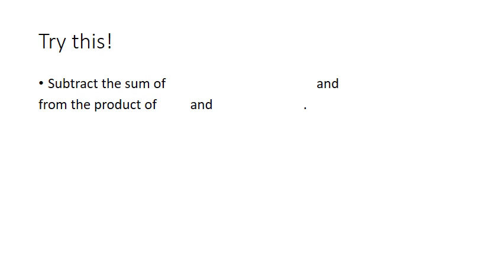Now, let's take a look at a question, whereby we work out how expressions interact with each other. Subtract the sum of 2x squared minus 6x minus 3 and 7x minus 5 from the product of 2 and 4 minus x squared. From this question, we know that we need to find the sum of the two expressions first.